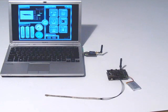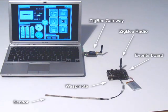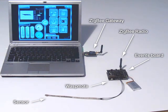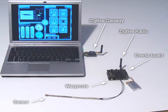We will show you in this video how to use the Wasmote Events Sensor Board. We will connect each sensor to the Events Board, which is then plugged into the Wasmote. The value read from the sensor is transmitted using Zigbee to the Gateway, connected to the laptop.